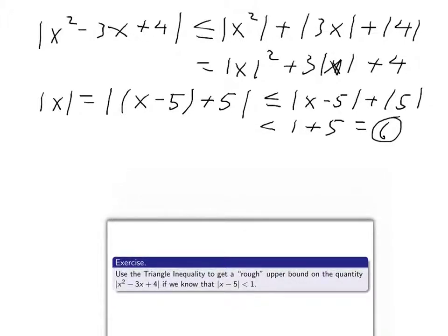And so, if we now go back here, we can replace all these absolute x's by 6, and that will give us an upper bound. So, therefore, we're able to conclude that the absolute value of x squared minus 3x plus 4 is less than, so I'm looking here, each of these is less than if I replace x by 6. So, that's 36. 3 times 6 is 18 plus 4. 36 and 4 is 40. 40 plus 18 is 58. So, that's my answer. That's the upper bound that I'm looking for.